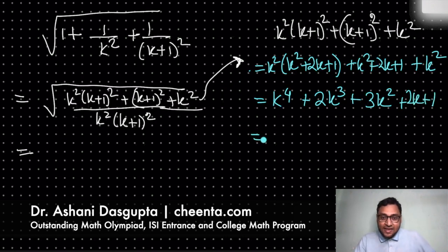Okay, now this thing you can actually simplify. Try to factorize this. I will not do the entire factorization. I will ask you to do the factorization and put the derivation in the comments. But the final answer would be very beautiful. It is (k squared plus k plus 1) whole squared.